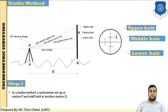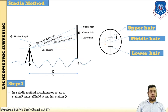Now I have explained about the stadia method. In the stadia method, step number one: first set up the instrument station — the tachymeter — at ground station P. Place a staff at another station Q. So P is the instrument station and Q is the staff station. Our main goal is to find the capital D — the distance — not using a tape or chain, but using a formula. Three things need to be found: S (staff intercept), small 'i' (stadia intercept), and theta (vertical angle). After finding theta, S and i, you find capital D.